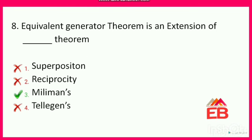Next: the Equivalent Generator theorem is an extension of which theorem? Options are superposition theorem, reciprocity theorem, Millman's theorem, or Tellegen's theorem. The correct option is option 3 — it is an extension of Millman's theorem. Equivalent Generator theorem is also called Millman's theorem.